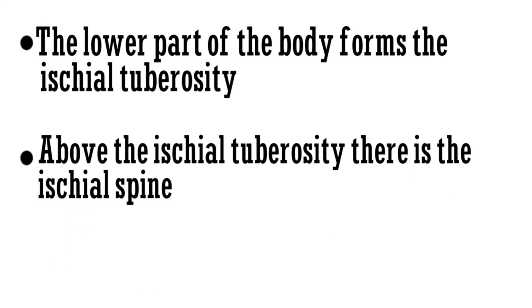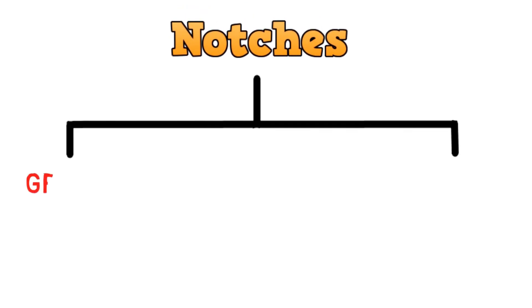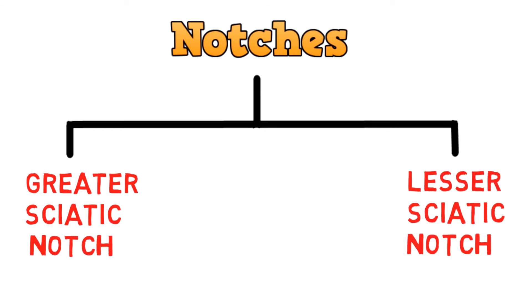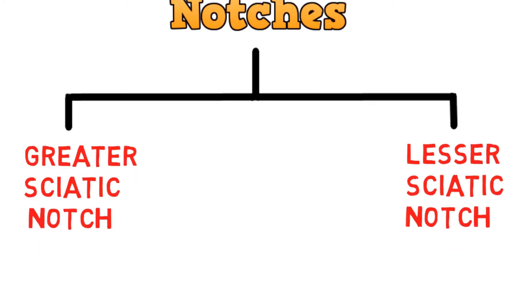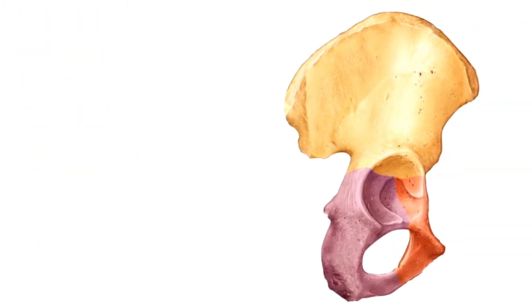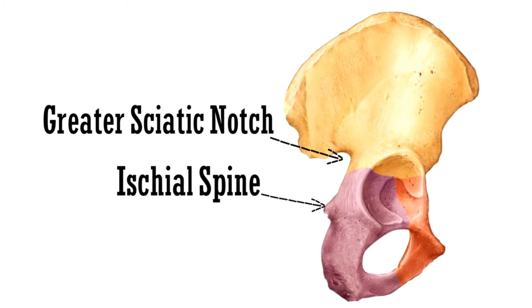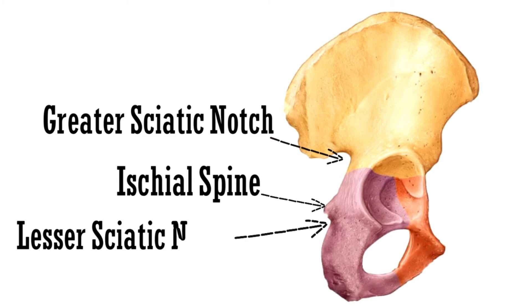To understand the function of the ischial spine, we need to discuss the notches present. There are two notches: the greater sciatic notch and the lesser sciatic notch. The function of the ischial spine is to separate the greater sciatic notch from the lesser sciatic notch. This part is the greater sciatic notch, below it is the ischial spine, below that is the lesser sciatic notch, and lastly this is the ischial tuberosity.